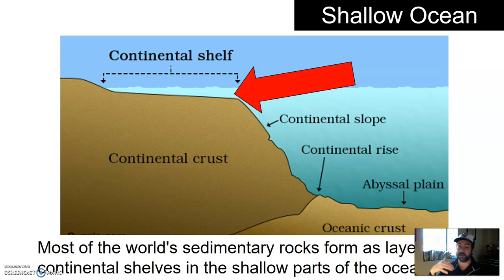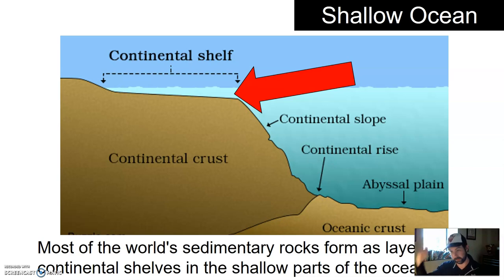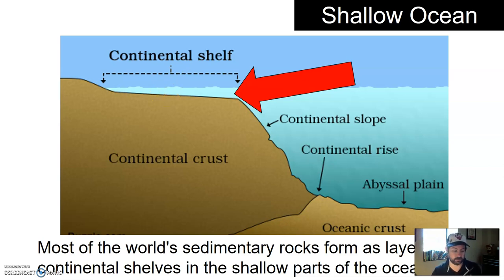Over time, sediment was deposited when the ocean was there. When the ocean went away, the material began to lithify. The ocean came back in, sediment was deposited, and stuff lithified again. So for the shallow parts of the ocean — if you can identify a rock as sedimentary, it probably formed in the shallow parts of the ocean. That's probably a good guess — maybe seven or eight times out of ten you'd be right, though not always because there are all these other depositional environments.